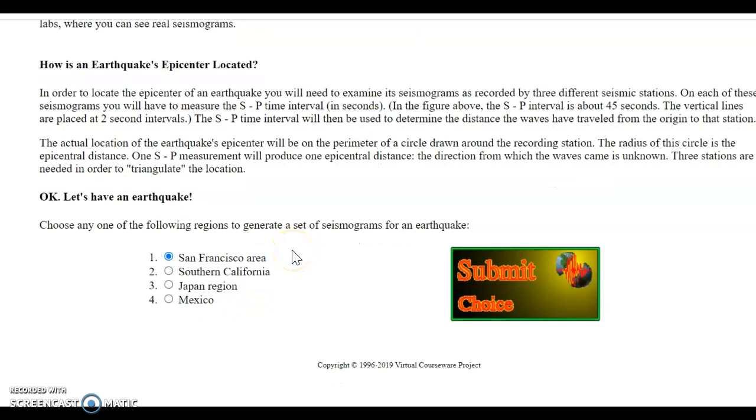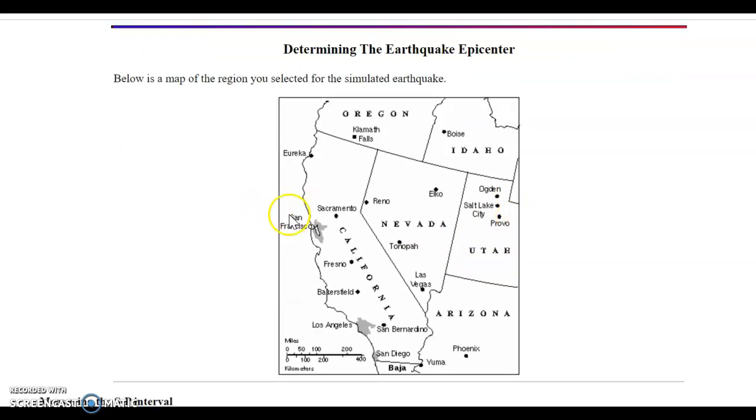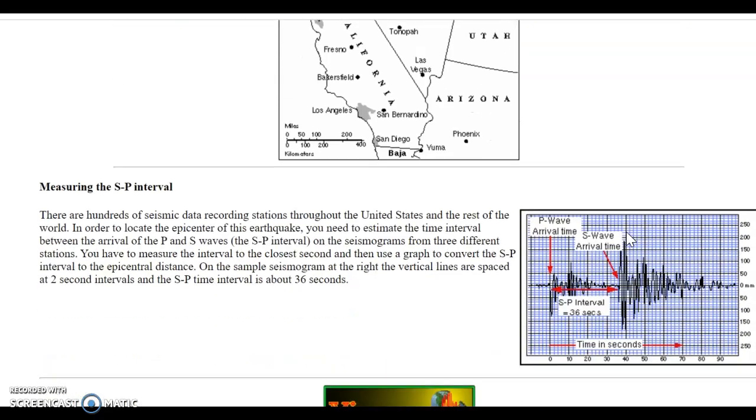You need to choose one area, and I'm going to go ahead and do the San Francisco area. When you do yours, you need to do number two, three, or four. Here's a map of the area. Here's San Francisco here. Three of these places will have a seismic station, and we'll be looking at a graph from those.